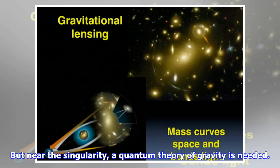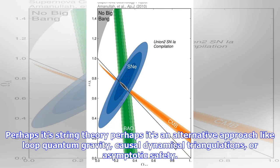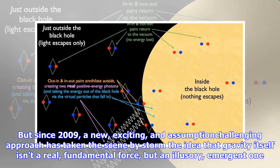The assumption we normally make is that there is a quantum theory of gravity, and we just haven't found it yet. Perhaps it's string theory, perhaps it's an alternative approach like loop quantum gravity, causal dynamical triangulations, or asymptotic safety. But since 2009, a new, exciting, and assumption-challenging approach has taken the scene by storm: the idea that gravity itself isn't a real, fundamental force, but an illusory, emergent one.